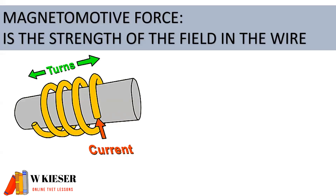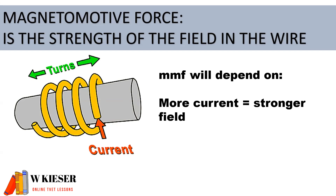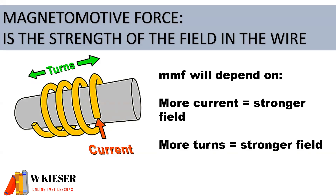The magnetomotive force (MMF) is the strength of the field inside the coils. The MMF will depend on whether there is more current, which will determine a stronger field, or whether there are more turns, which will also increase the field strength.